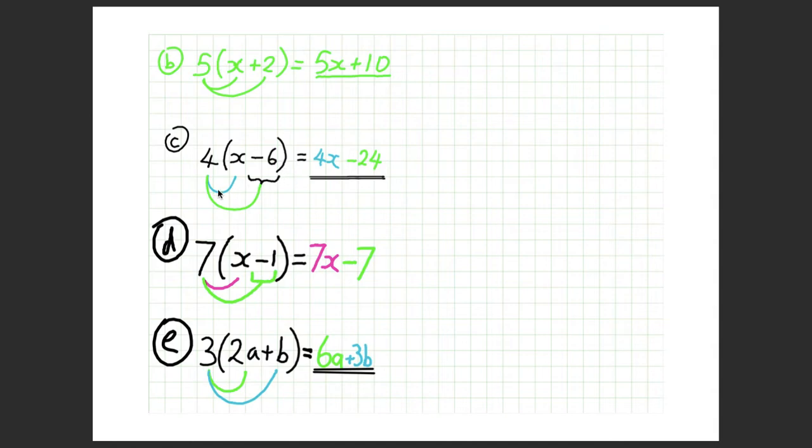4 times x gives you 4x. 4 times minus 6 gives you minus 24. 7 brackets x minus 1, 7 times x gives you 7x, 7 times minus 1 gives you minus 7.